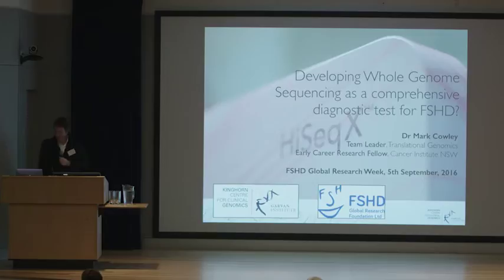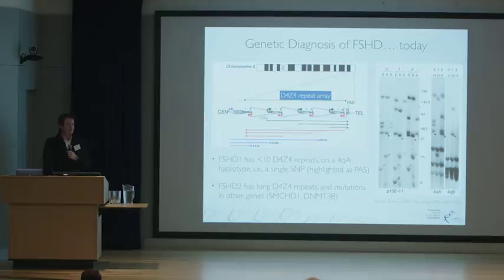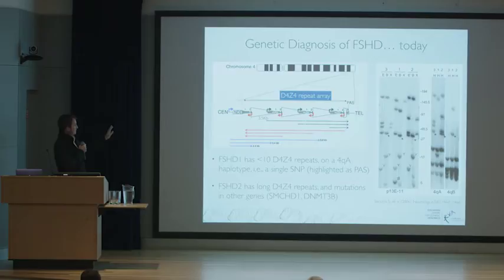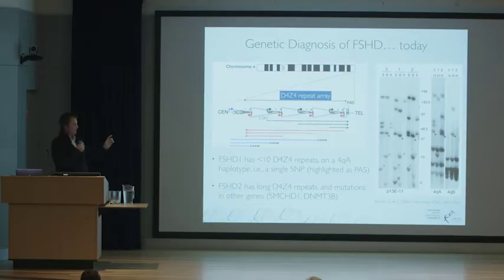Others have made this point really well today: the genetic diagnosis of FSHD is quite challenging in the lab. To do it well, we need to deconvolute the length of this D4Z4 repeat which is on the tip of chromosome 4. We need to know what haplotype it's on — that block of DNA that ends with a PAS, a single nucleotide change — and know that it's on the same block.